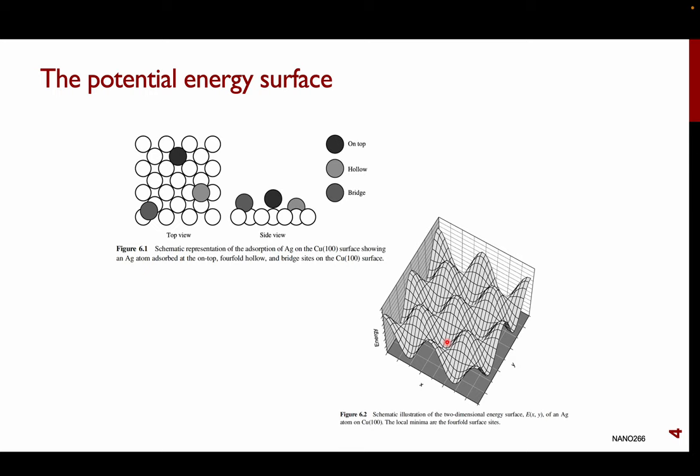In lab number four, you will actually be doing exactly this type of calculation — calculating the adsorption of hydrogen on the aluminum surface, looking at the different sites where hydrogen can sit and what the energy of those sites is.